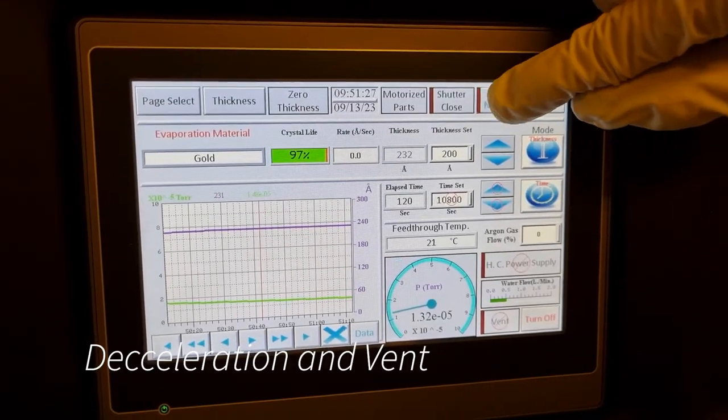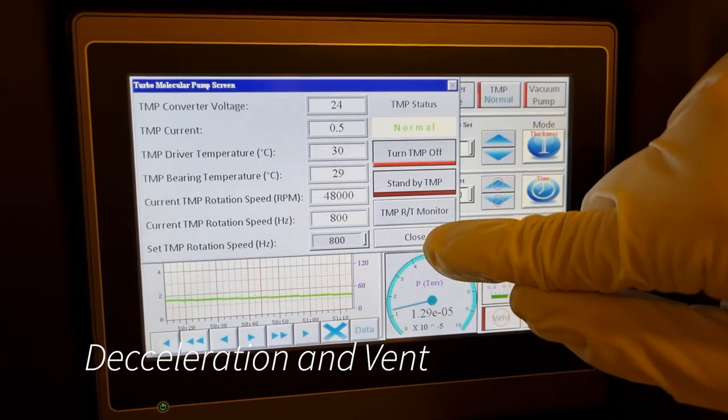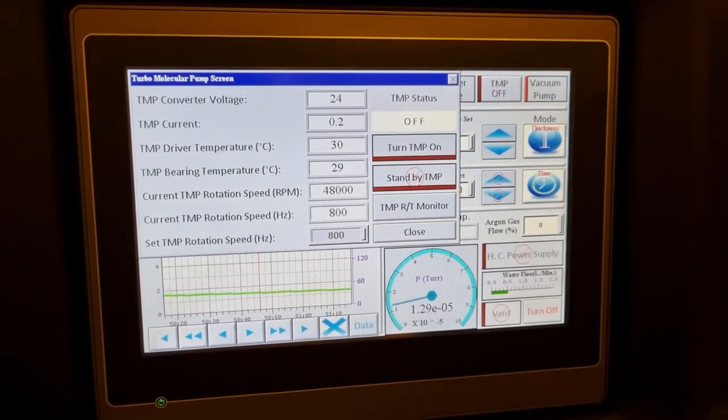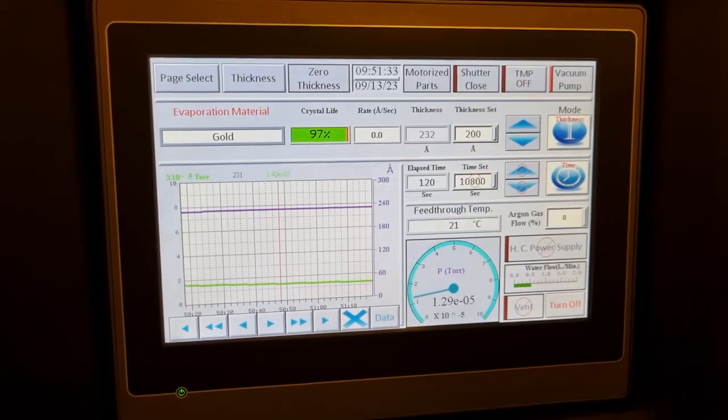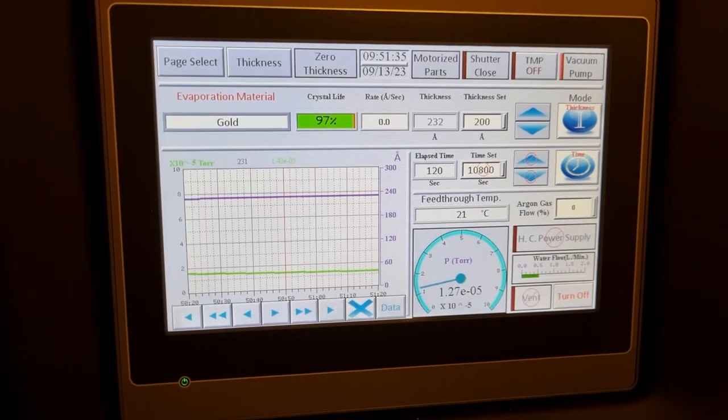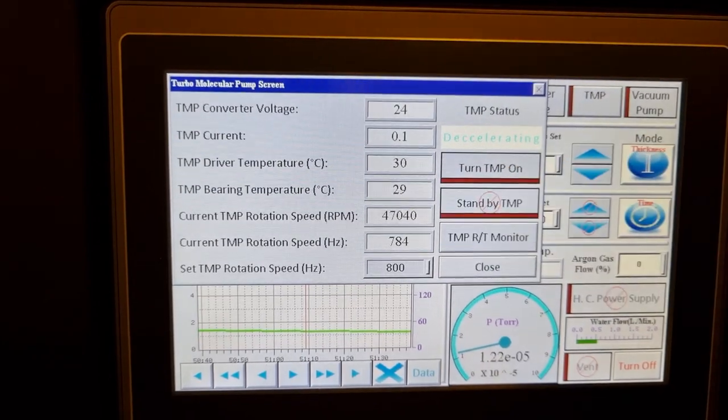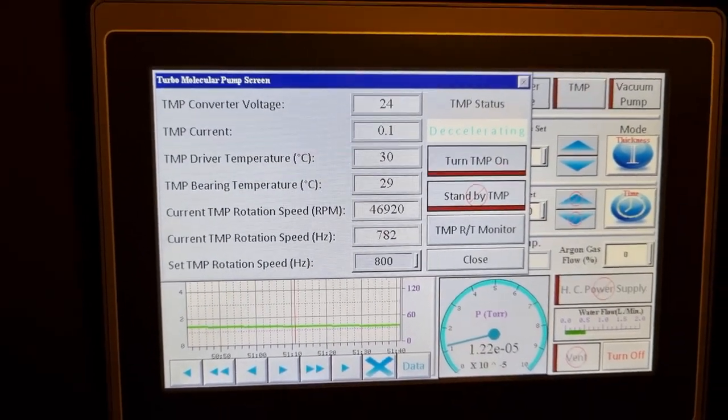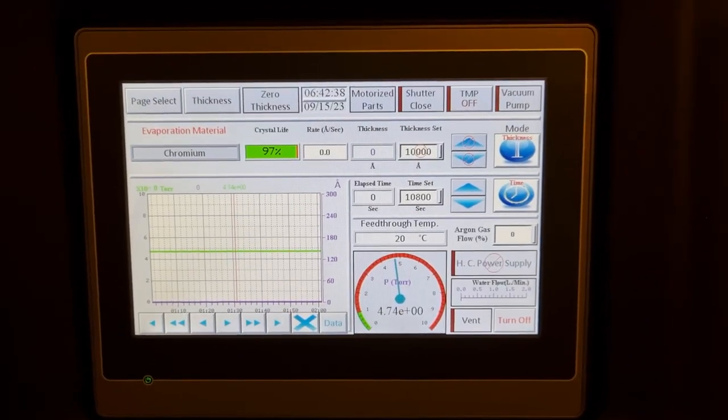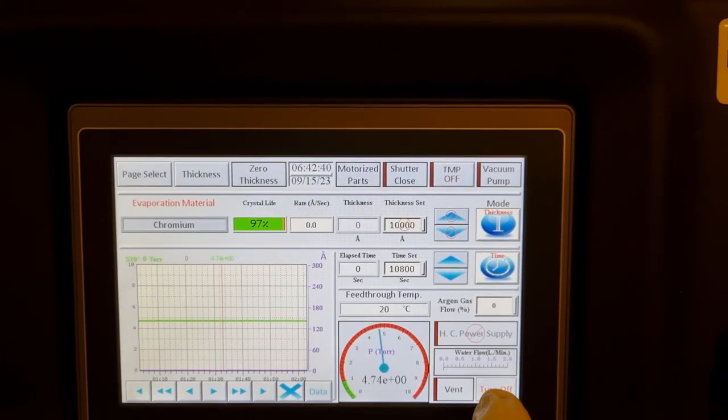When you're done with your films, we'll turn the turbo molecular pump off. The turbo molecular pump takes about 20 minutes to spin down from 800 hertz. Here you can see it drops at about 1 hertz per second. You must keep the mechanical roughing pump going while the TMP is decelerating.